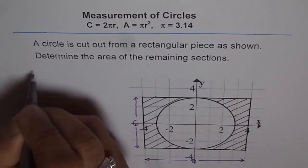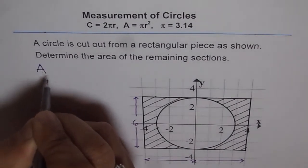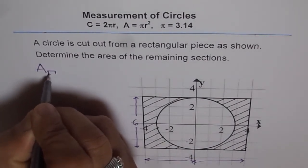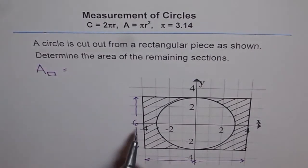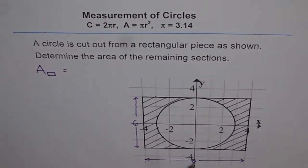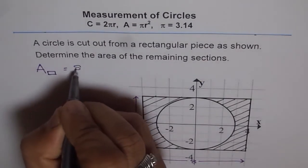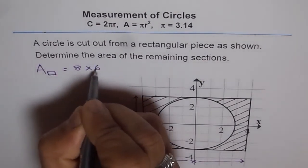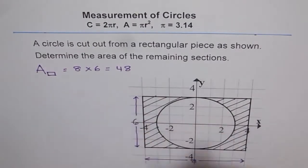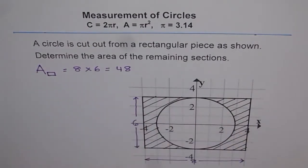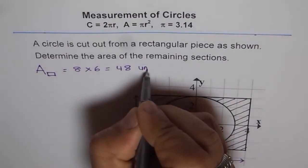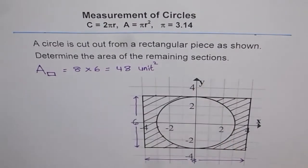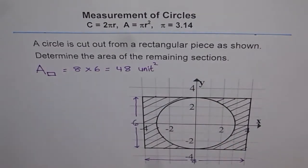Therefore, the area of rectangle – let me make this rectangle – is equal to length into width, which is 8 times 6. Length is 8, width is 6, which is 48. And units, if no units are given, we can say unit square. That is the area of rectangle.